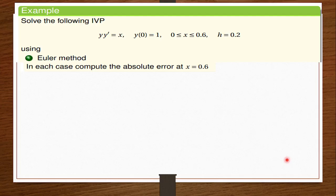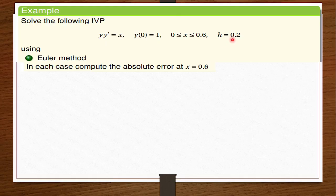When it comes to the Euler method using the ODE single steps, we've been given the differential equation. Remember that in our previous videos we have been dealing with polynomial equations, so in this one we are dealing with differential equations. We've been given the initial value y₀ which is 1, and we've been given the interval for x starting from 0 and ending at 0.6, and the step length h is 0.2. We are asked to use the Euler method and in each case compute the absolute error at x equals 0.6. So with our interval for x and knowing h, we can go ahead to draw our table and find the values for x.